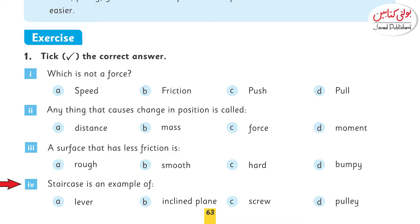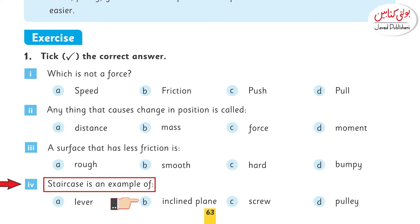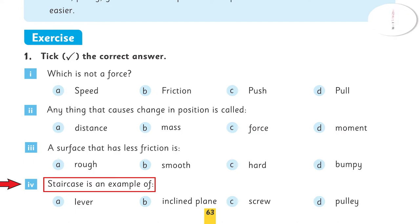Question number 4: staircase is an example of — and your options are lever, inclined plane, screw, and pulley. The right answer is inclined plane.